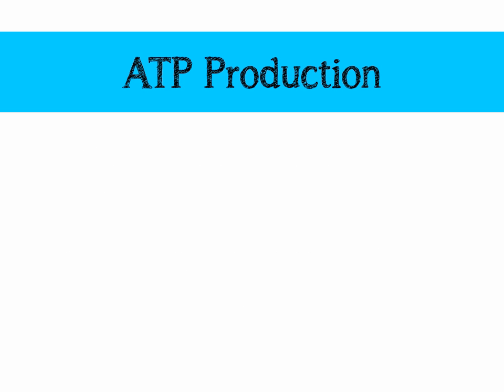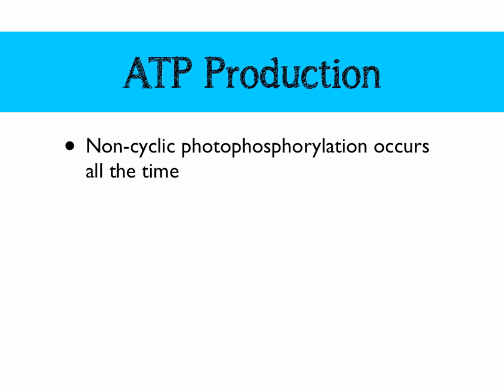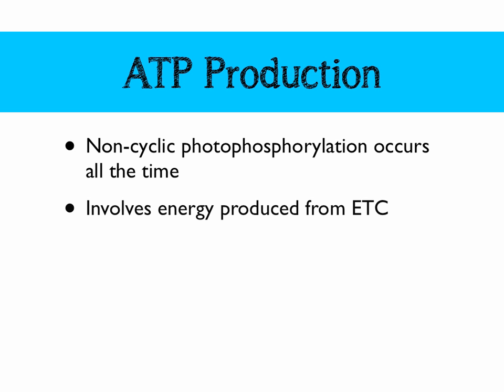Let's have a look at the way that ATP is produced. There are two methods for this. Firstly, we have non-cyclic photophosphorylation, and this happens all the time. This involves the energy being produced from the electron transport chain as electrons move from protein to protein.